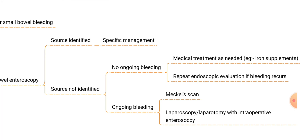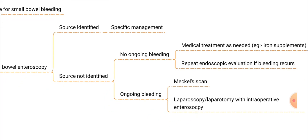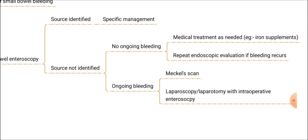If after the enteroscopy the patient has ongoing bleeding but no source has been identified, this is an indication for Meckel's scan — a form of nuclear medicine scan using red cell scintigraphy — with which we may find a bleeding point. If ongoing bleeding is still present, there is also a place for laparoscopy or laparotomy with intraoperative enteroscopy.